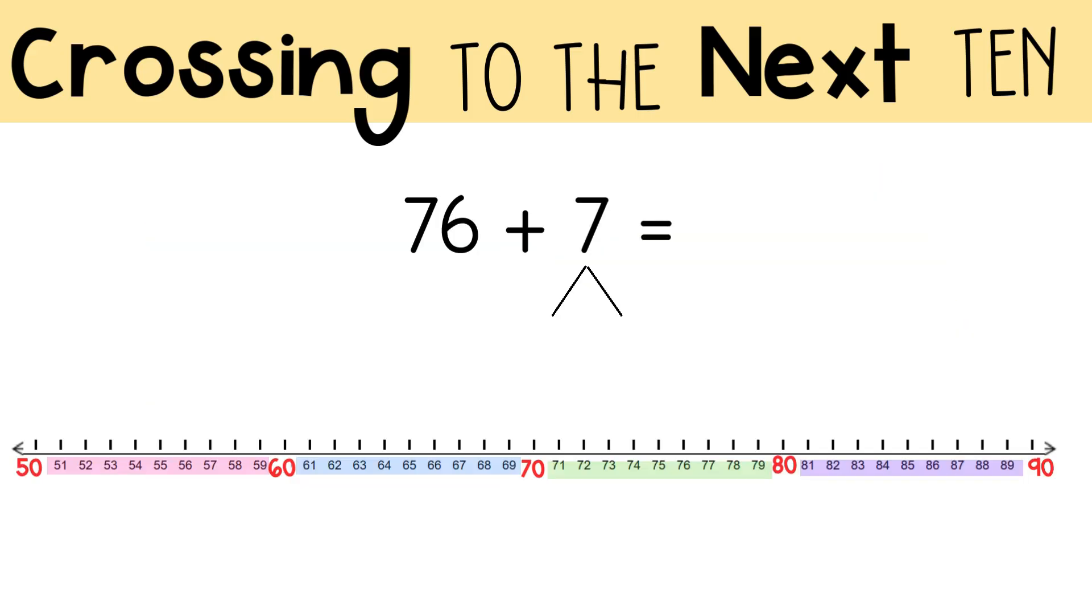Here's the problem: 76 plus 7. You need to decide if you will be crossing a ten to solve. If you are, break up the 7 into two parts. The first part is how many jumps you need to get to the next 10.